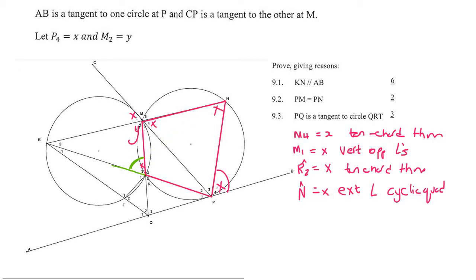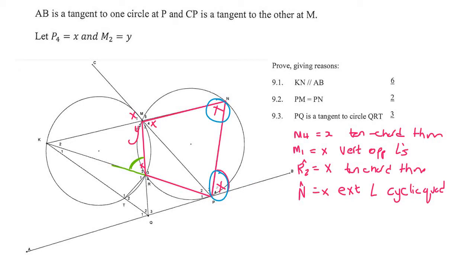Now we can see that these two angles are the same — that's like alternate angles — so those two lines must be parallel. We can say KN is parallel to AB. Don't just say 'alternating angles' because we're working in reverse; say 'converse alternate angles' or that the alternate angles are equal to each other, and therefore those lines are parallel — for six marks. That's quite a good question.